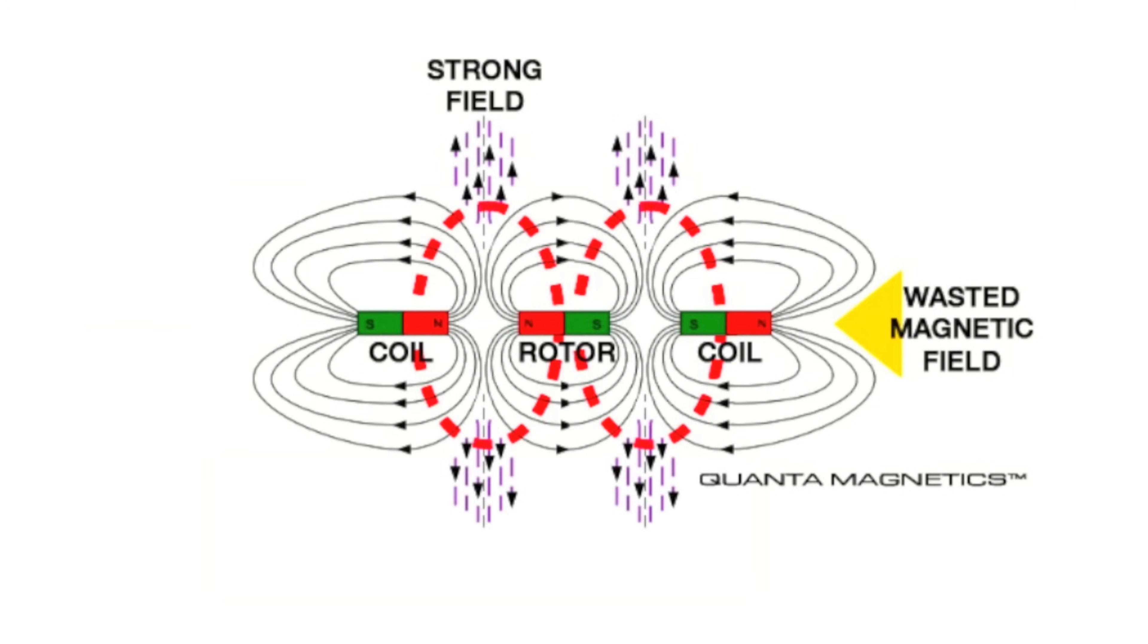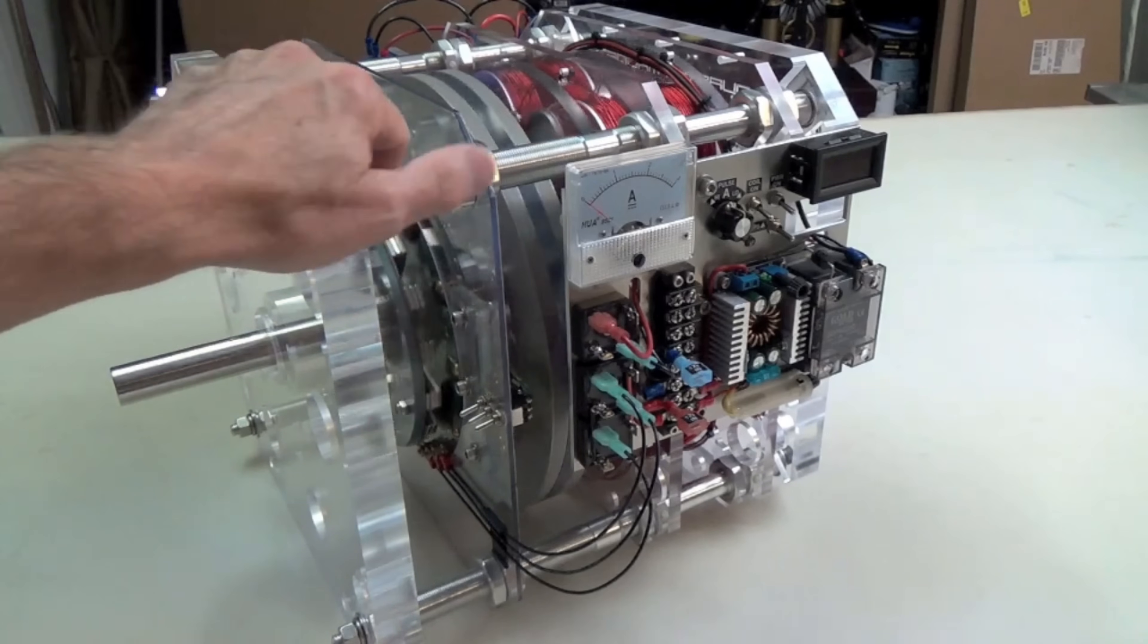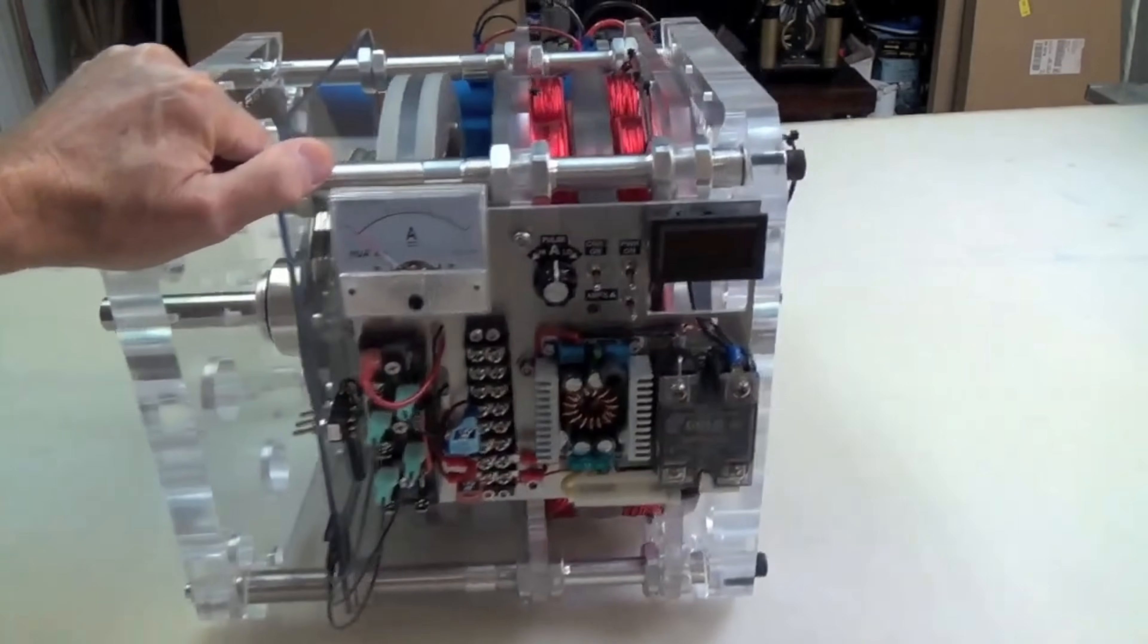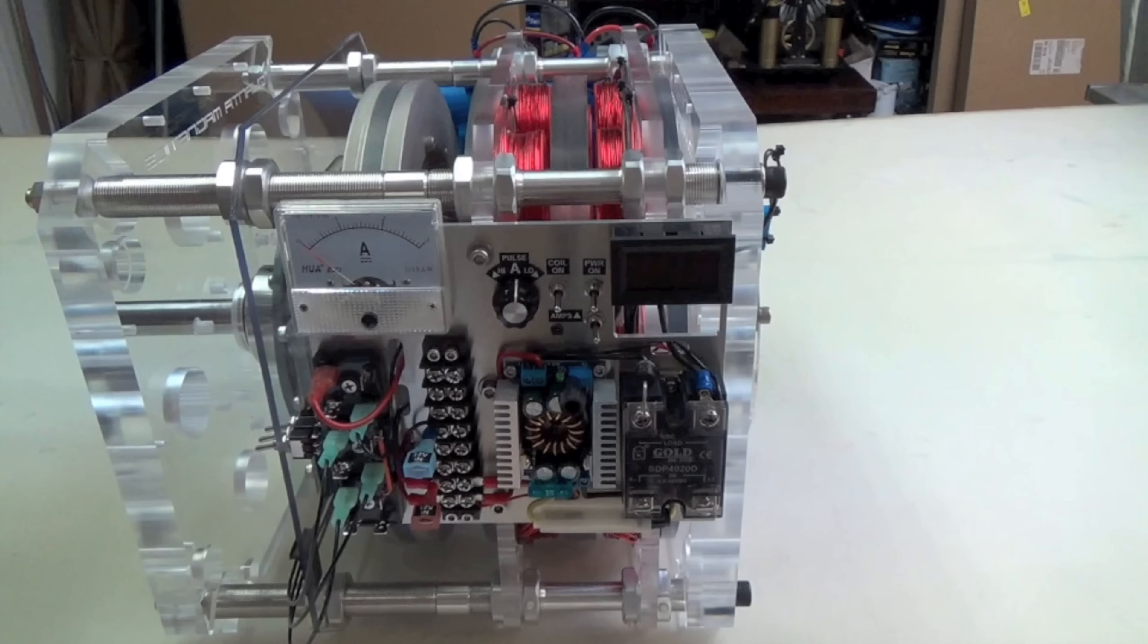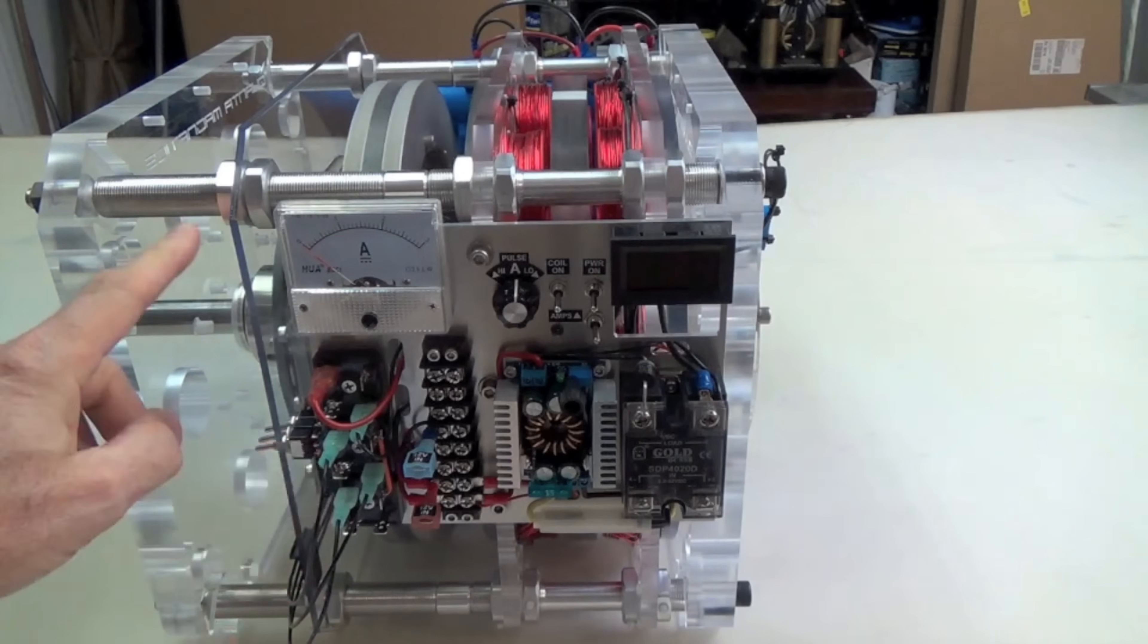The electricity output of Cromry's magnetic free energy generator is nothing short of astounding. Capable of producing enough power to run a household, the device represents a seismic shift in the way we think about energy production. Its efficiency and sustainability are unparalleled, paving the way for a future where clean, renewable energy is accessible to all.